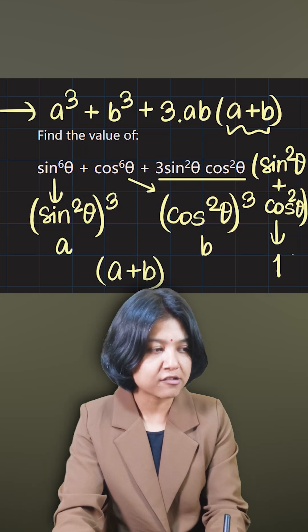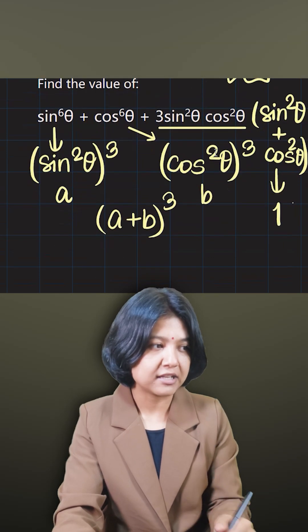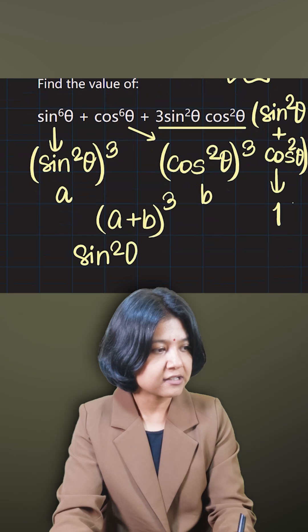In this question, I have a as sine squared theta, b as cos squared theta. So sine squared theta plus cos squared theta, the whole cube.